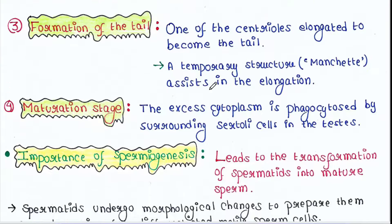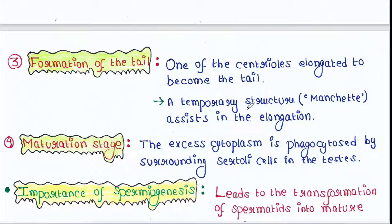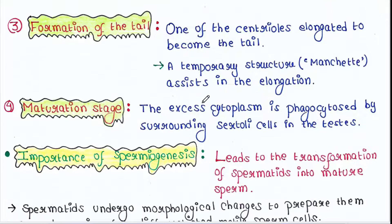A temporary structure called the manchette assists in this elongation process. Next is the maturation stage. The excess cytoplasm is phagocytosed by surrounding Sertoli cells in the testes.